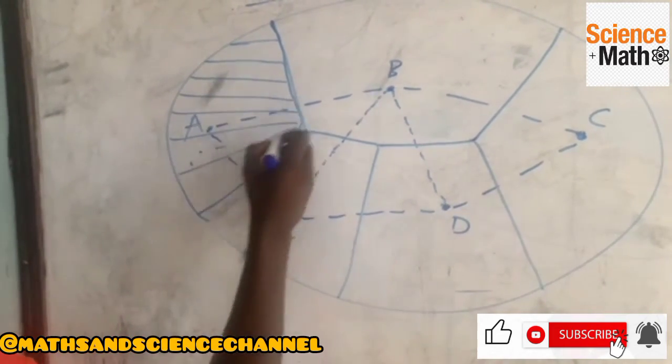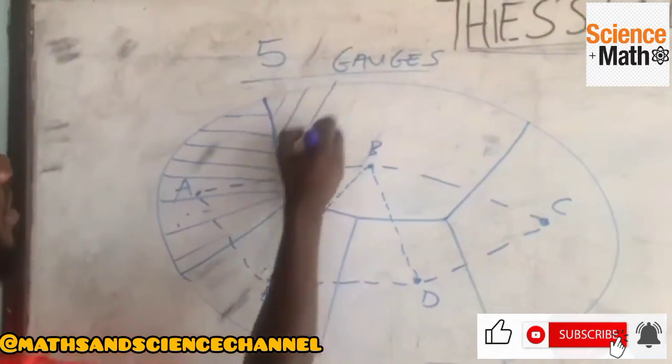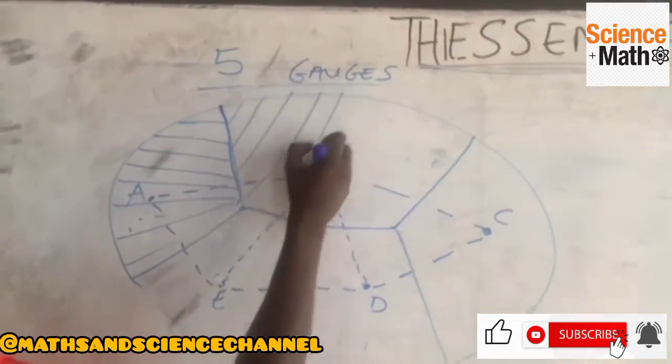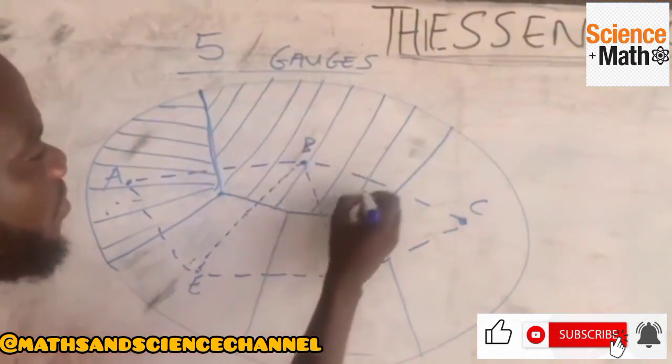So you just demarcate it. Remember, on the graph it's already there, so you are not going to do these things I'm doing. On the graph, the markings are already on the board. I have to do this to show the differences between everything.